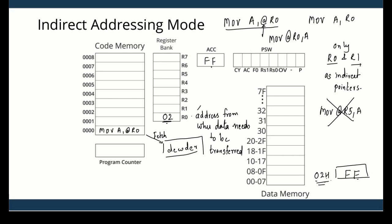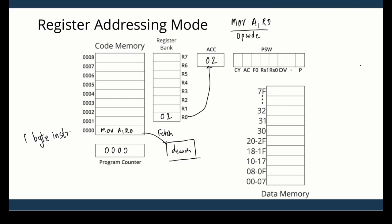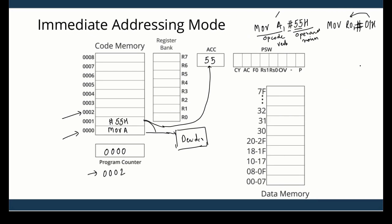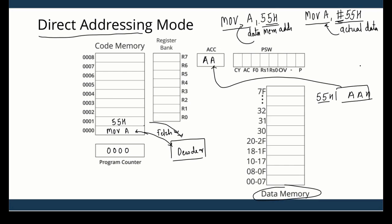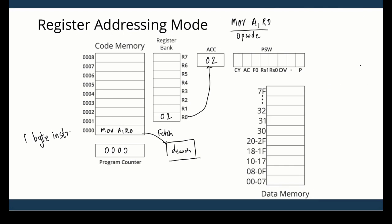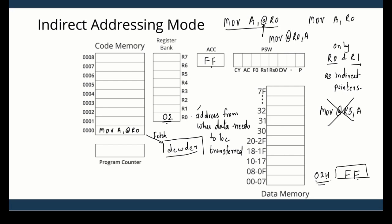With this we have looked at all the different addressing modes of 8051. The first is immediate addressing mode. The second is direct addressing mode. The third is register addressing mode. And finally, the fourth is indirect addressing mode.